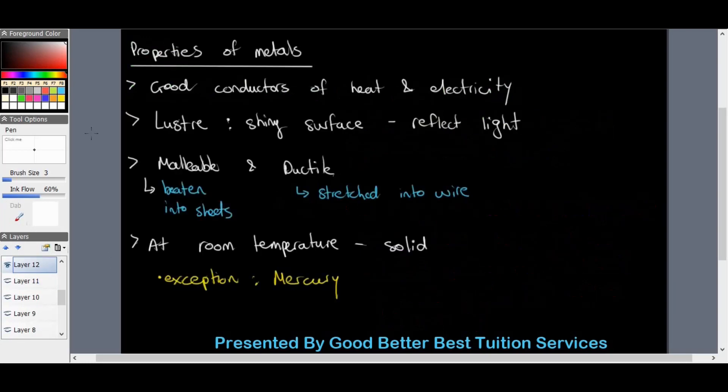Properties of metals include that they are good conductors of heat and electricity. Luster is a word that is given to metals as they have a shiny surface and they can also reflect light very well. Metals can be malleable and ductile. Malleable meaning they can be beaten into sheets, metal sheets such as zinc sheets, and ductile they can be stretched into wire.